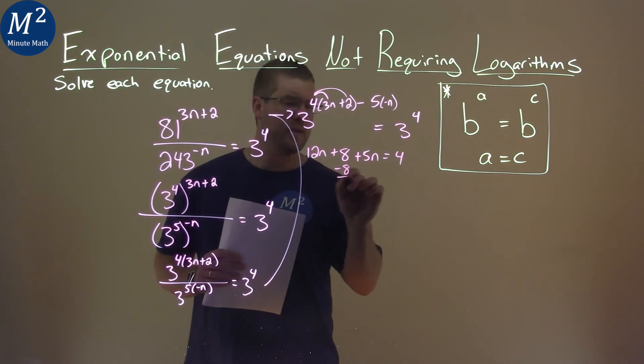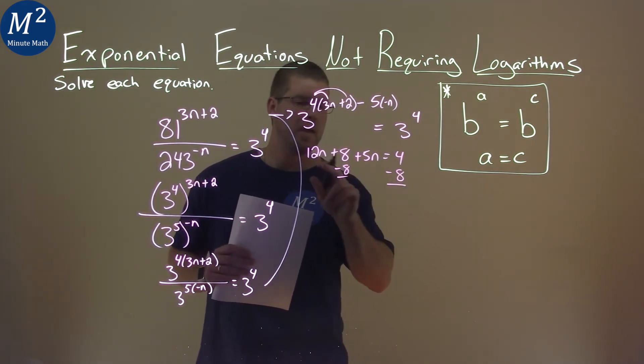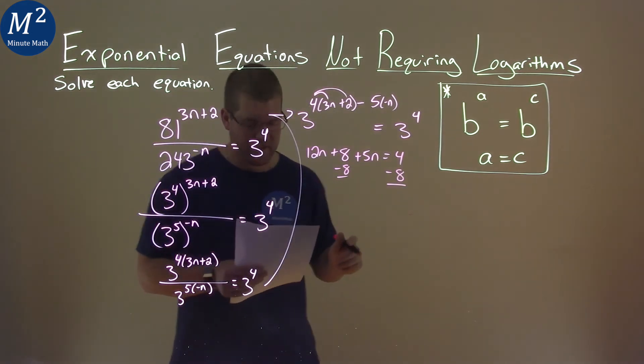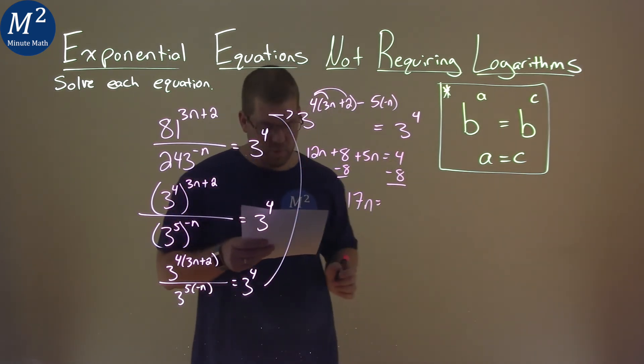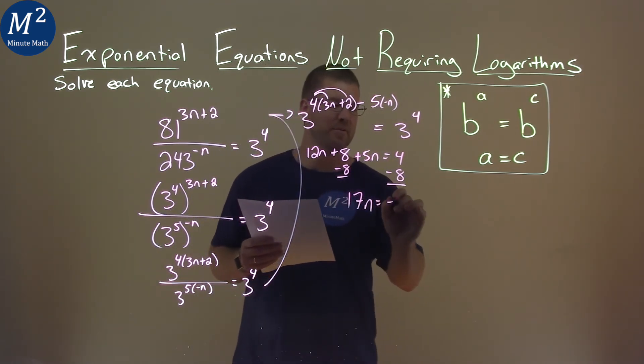Combine our like terms, subtracting 8 from both sides here. And 12n plus 5n is 17n. And 4 minus 8 is negative 4.